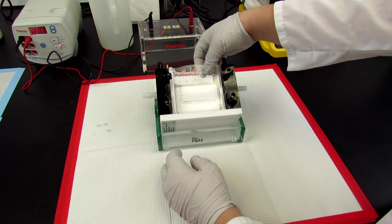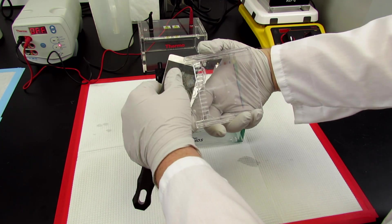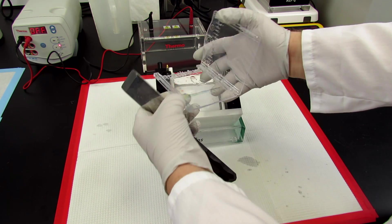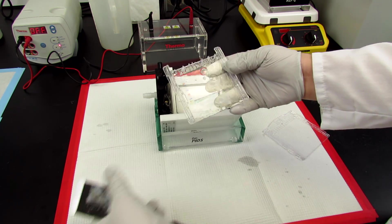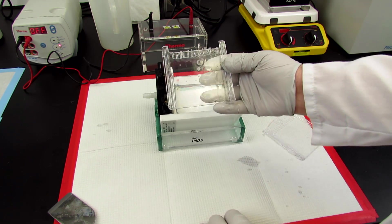Remove the gel cassette from the electrophoresis unit and carefully separate the gel from the plates. The gel is now ready for Western blot, Coomassie stain, or another protein analytical method.